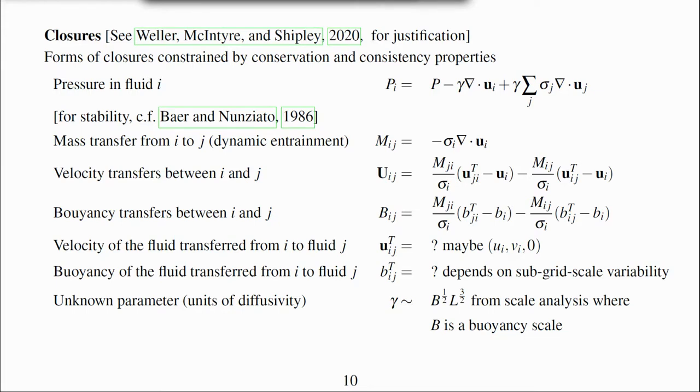Similarly, there is a source term for the buoyancy equation due to mass transfers. This form provides energy conservation. B_ij superscript t is the buoyancy of the fluid transferred from i to j.